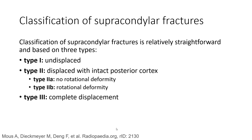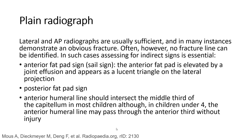Classification: Type 1 is undisplaced. Type 2 is divided into subtypes — Type 2A with no rotational deformity, and Type 2B with rotational deformity. Type 3 is complete displacement. Lateral and AP radiographs are usually sufficient and, in many instances, demonstrate an obvious fracture.